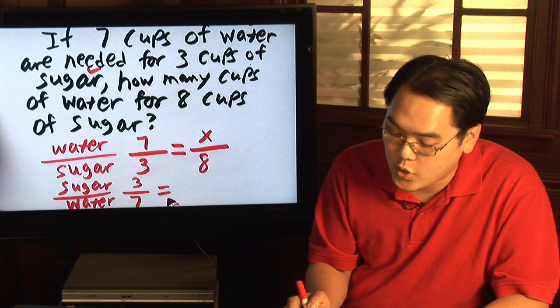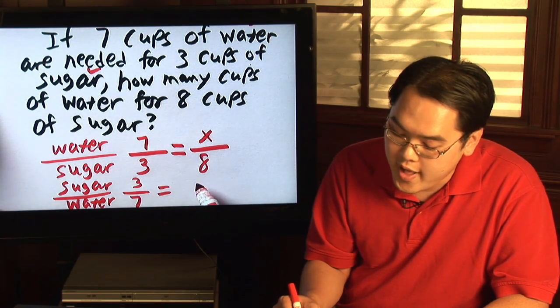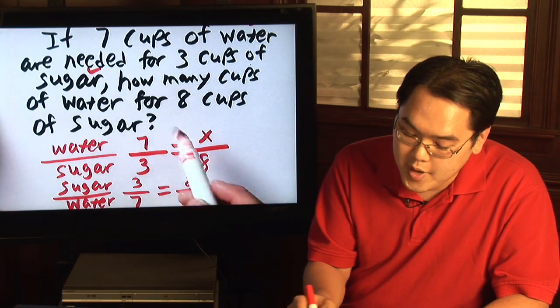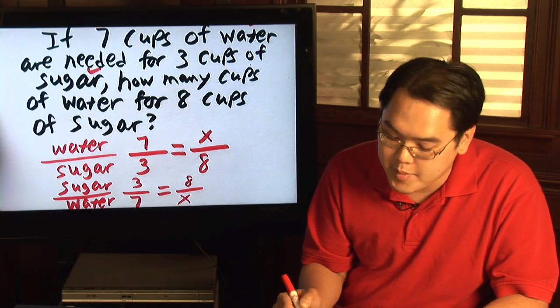And then, on the other side of the equation, because you have eight cups of sugar, that will be your numerator, and the number of cups of water needed is x on the bottom.